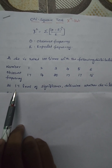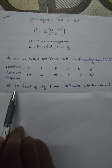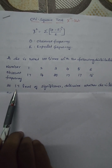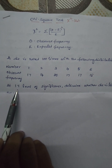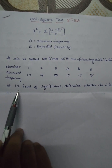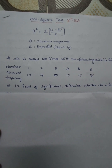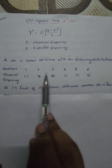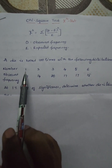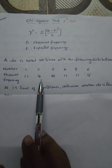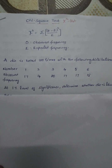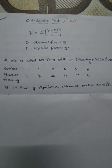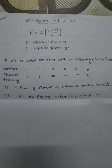In statistics, we always use 5 percent or 1 percent level of significance. In this problem, they have asked at 1 percent level of significance. The question is whether the die produces the observed results or not — is it true or not? For that testing, we are using the chi square test here.